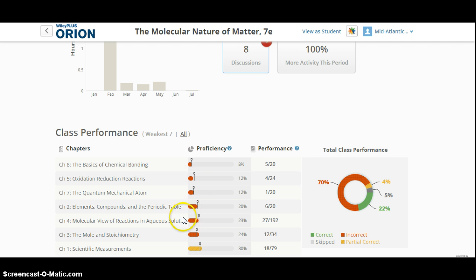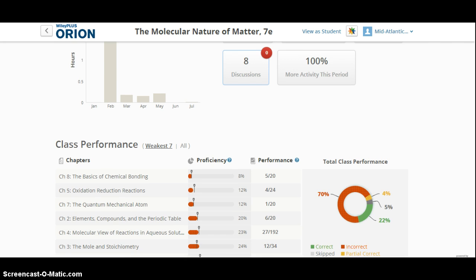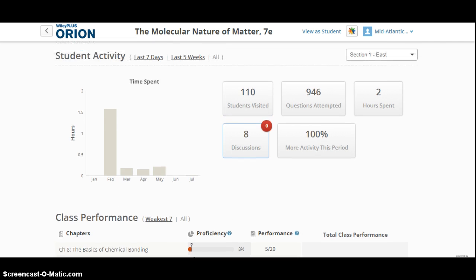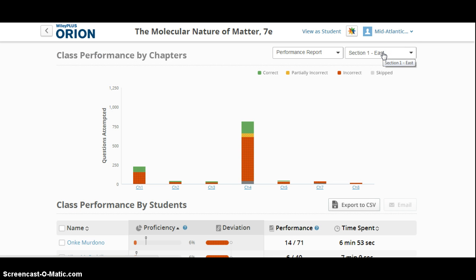Notice the report here is selected for the weakest 7 chapters, but you could also take a look at all of the chapters that are specific to those that were assigned. You are then able to drill down into more detail to gain more insights about how your class is performing. This report is called a performance report, which outlines class performance by chapters.